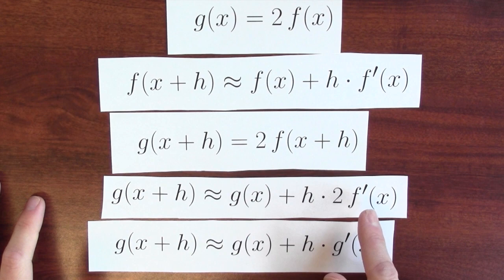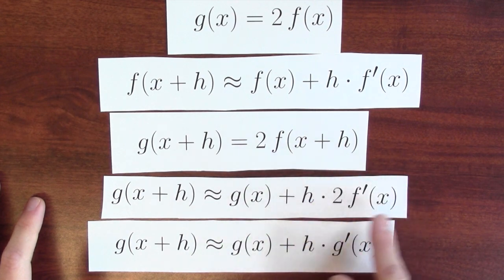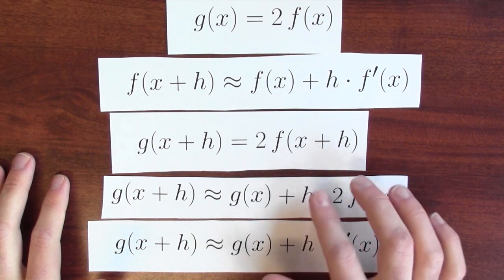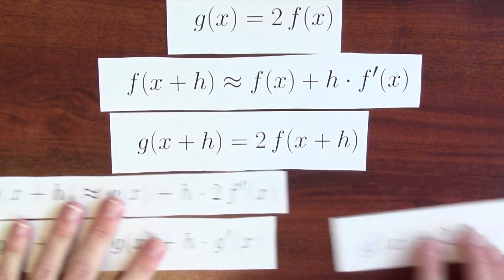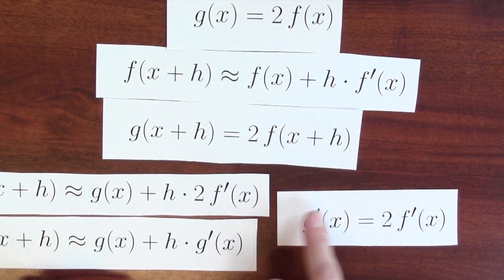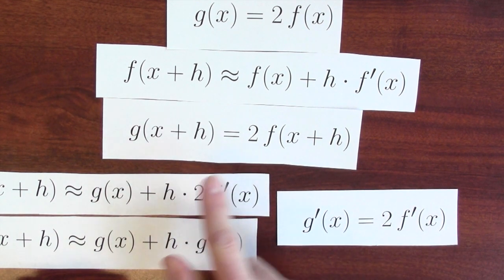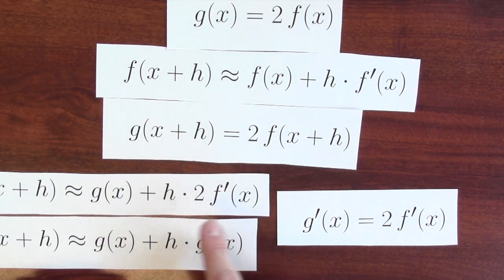Look, I've got the derivative of g here and I've got twice the derivative of f here. And if you believe that these statements are connected in this way, you might then believe that the derivative of g is twice the derivative of f. The derivative of g here is twice the derivative of f.